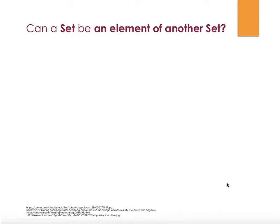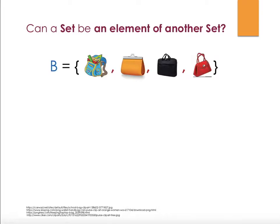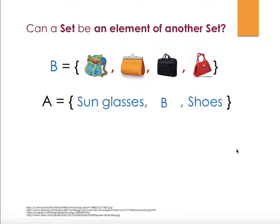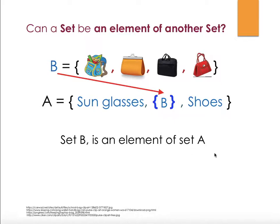Can a set be an element of another set? We have set B which includes certain bags, and set A equals {sunglasses, B, shoes}. Since sunglasses and shoes are elements but B is a set, we put brackets around B to show this B and that B are connected. This means set B is an element of set A.